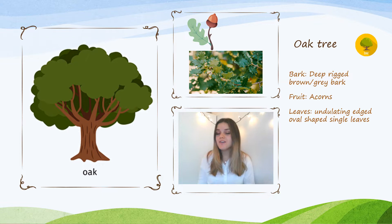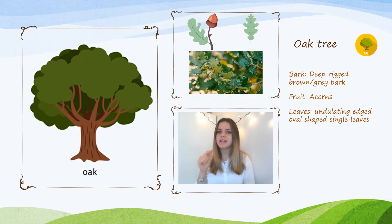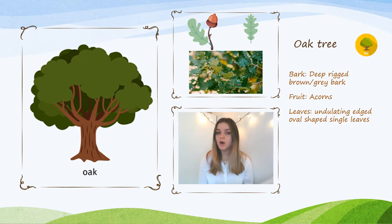Oak trees also have a very unique kind of leaf that makes them easy to identify. It has a sort of wave pattern going down the sides — it kind of goes in and out a lot. When you see both acorns and these kinds of leaves with that flowing in-and-out motion along both sides, you can tell you have an oak tree. So next time you're out in the forest and you see acorns on the floor or these kinds of leaves, you can look around and find your oak tree.